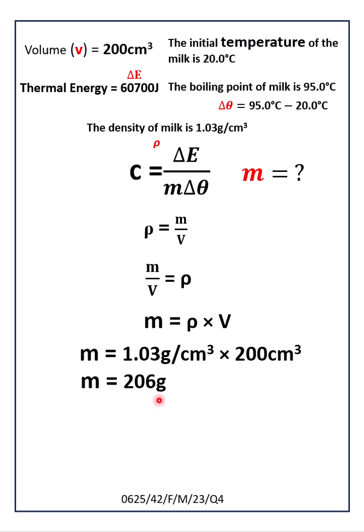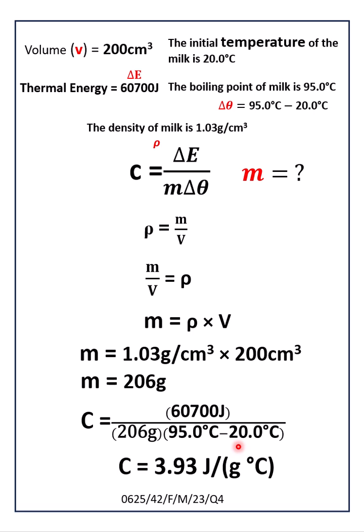Now we can substitute the values in the equation C equals delta E divided by m delta theta. We get the final answer: specific heat capacity equals 3.93 joules per gram degree Celsius.